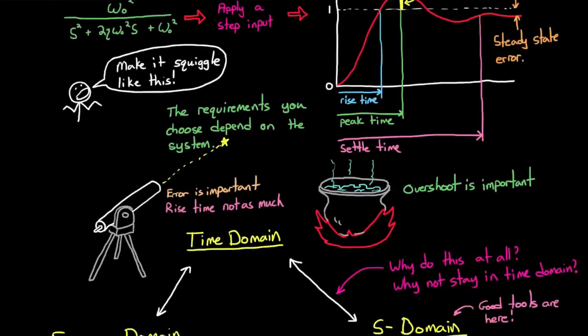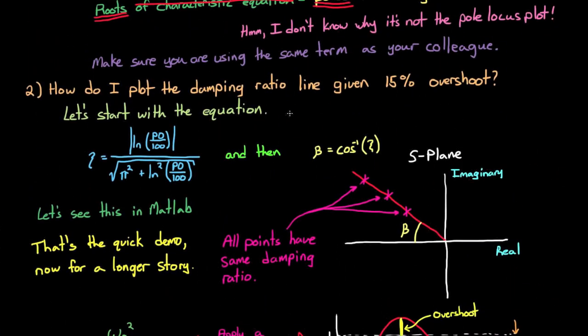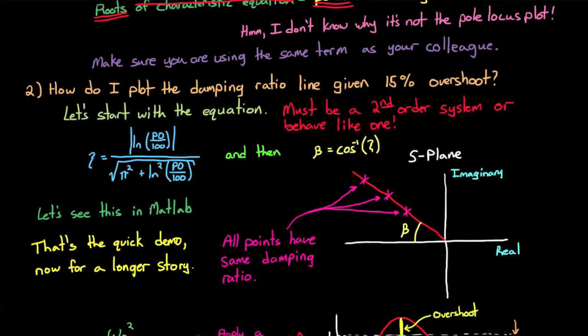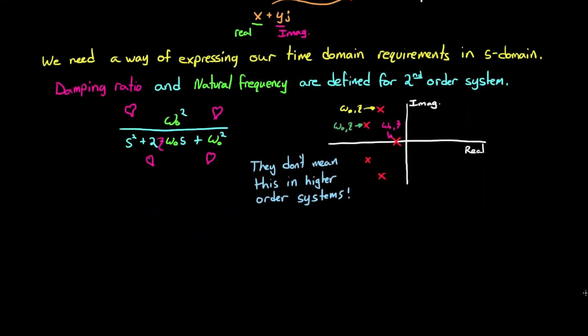In control theory we have this obsession with second-order systems because you can build up higher orders from them, and many real systems exhibit second-order behavior so they're worth studying. But just remember that in our percent overshoot problem, if I hadn't defined the system as second-order, or if the system didn't have a pair of dominant poles that made it behave like a second-order, then the relationship between percent overshoot and damping would not have held.